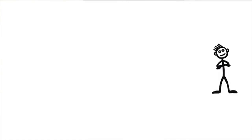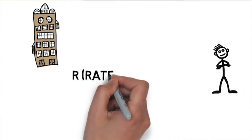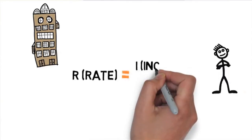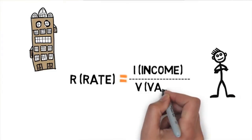And Irv is flexible. Let's say you're looking at the values and income produced by comparable properties and want to know what the rate is. Simply rearrange Irv. Rate equals income divided by value.